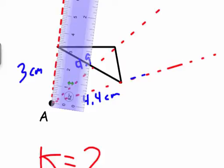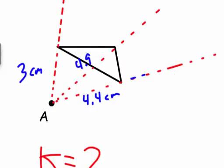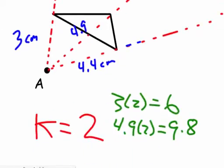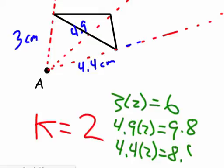If I'm going to dilate it by a scale factor of 2, what do you think I multiply each distance by? Well, 2. So I've got to take 3 times 2, so 6 centimeters for the one. I've got to take 4.9 times 2, so now I want a distance of 9.8 centimeters. And take 4.4 times 2, so I want a distance of 8.8 centimeters.